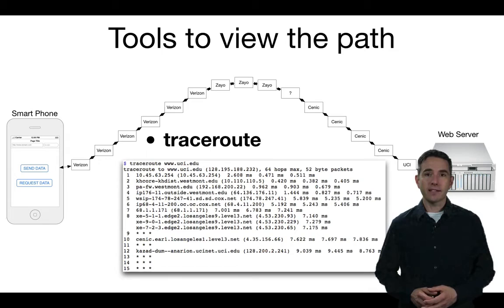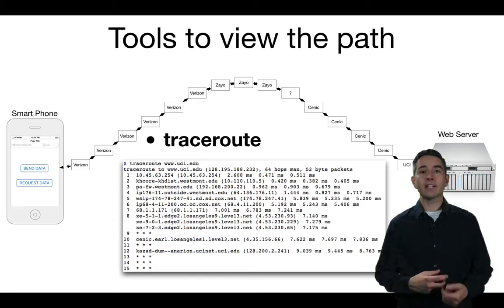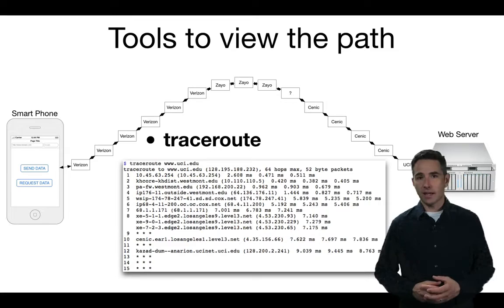Traceroute is a command you run on a command-line interface in a terminal or command window. You type the command 'traceroute' (it varies slightly by platform) and then specify the destination you want to trace the route to. Where you run this command really matters: if you run it from your computer, the route traced will be from your computer to the destination.